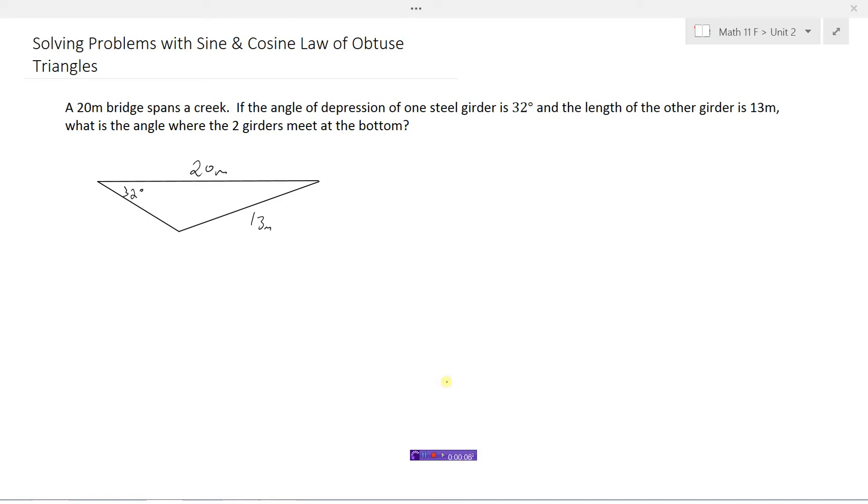Here we have a 20 meter bridge that spans a creek. The angle of depression of one of the steel girders is 32 degrees and the length of the other girder is 13 meters. The question is what's the angle where the two girders meet at the bottom?